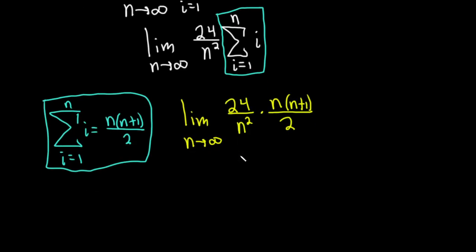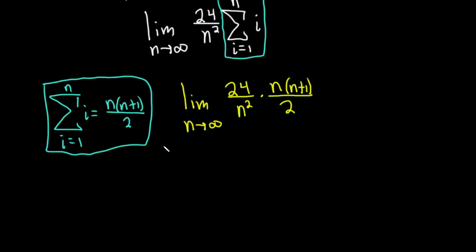All right, so let's see what happens here. We could simplify this a little bit. This is the limit as n approaches infinity. So 24 over 2 is 12. I'm going to put the 12 here, and then we're going to lose an n here. So it'll be 12 over n times n plus 1, and it's really over 1, because 2 goes into 2 once, 2 goes into 24 twelve times. Everything looks okay.